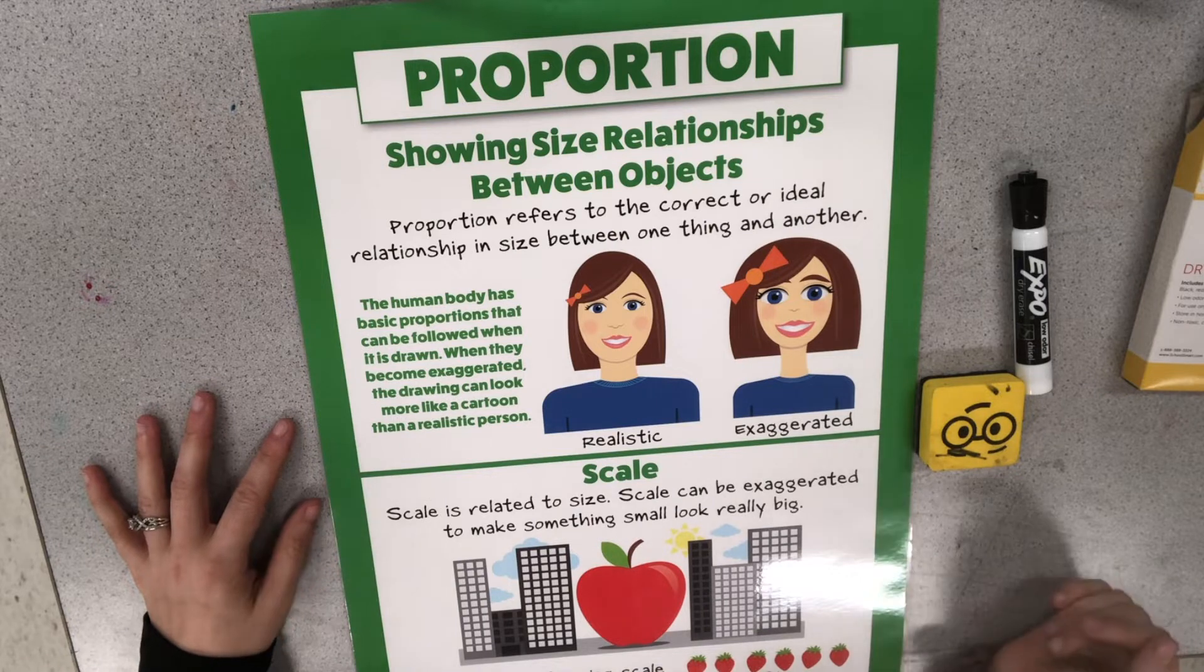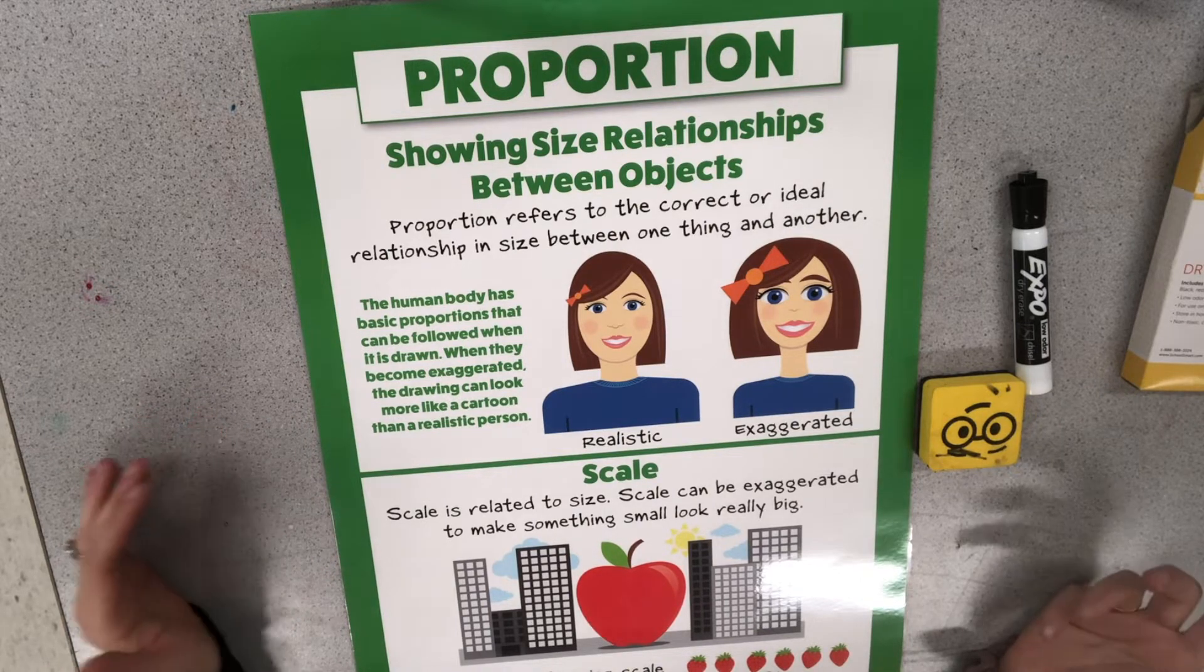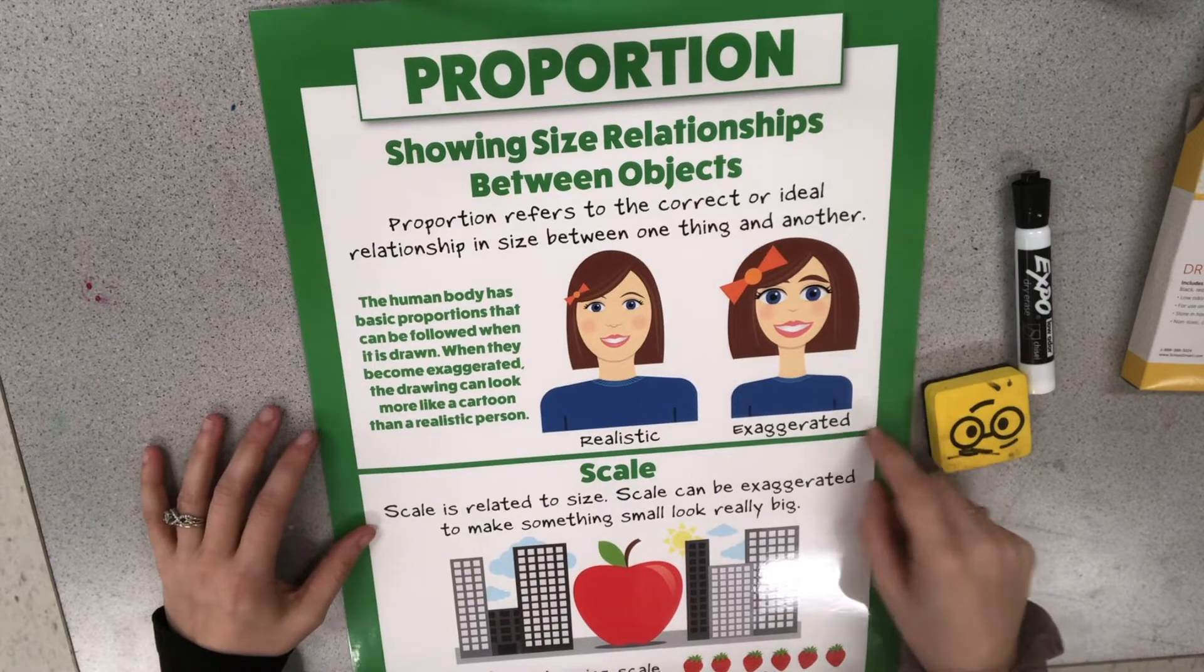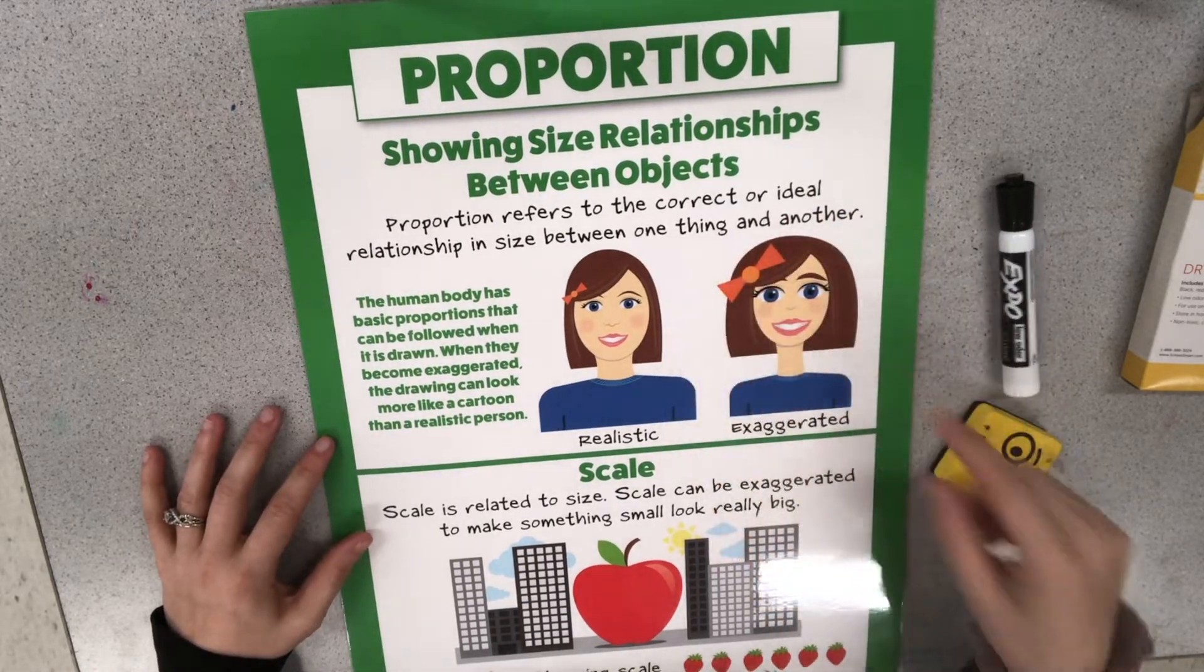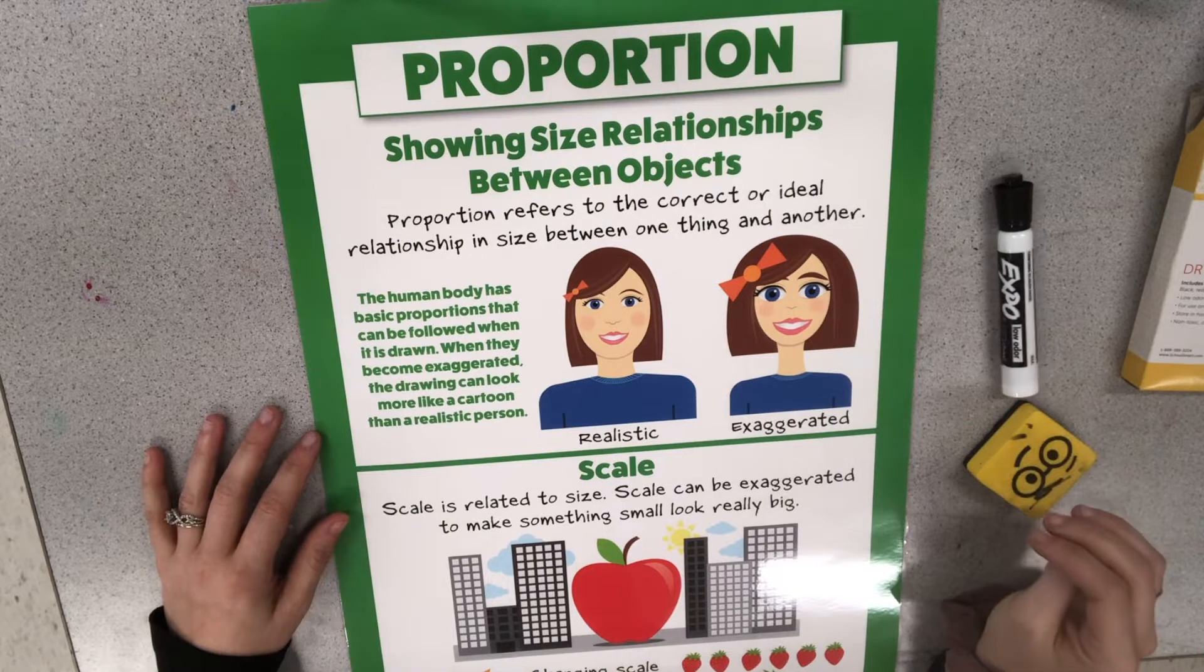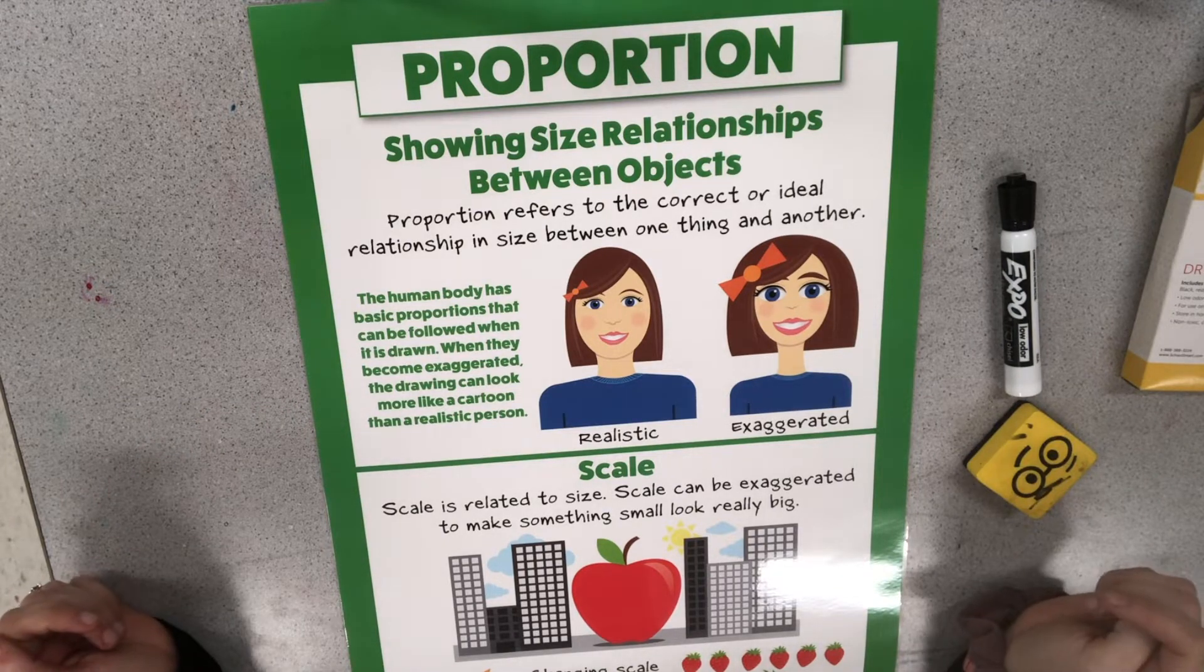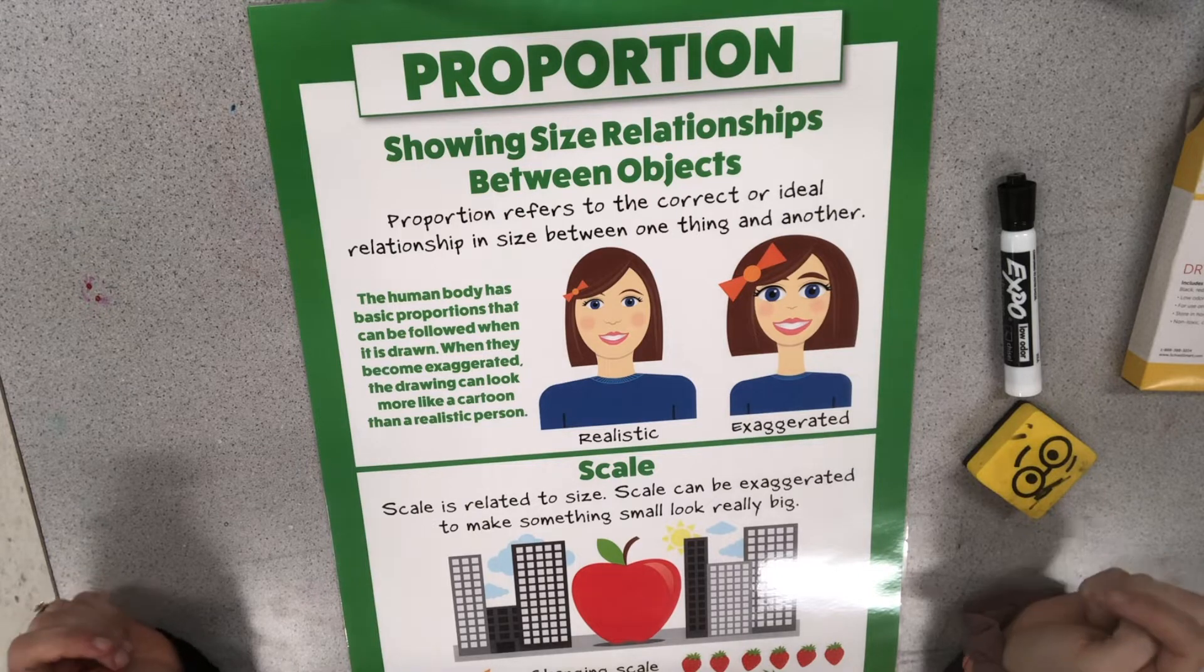And then another way you could think about proportions is exaggerated. So that would be more cartoon-like with maybe really big eyes or a larger mouth or a really big bow like in this picture.